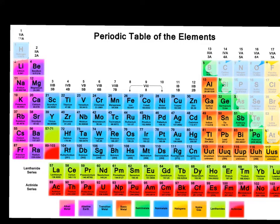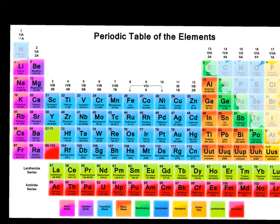Unlike ionic compounds, type 3 compounds are actually sharing electrons. Rather than nitrogen and carbon stealing electrons away from each other, they are in a relationship where they share their electrons so that both of them can have the octet fulfilled. That type of sharing relationship is called a covalent bond.